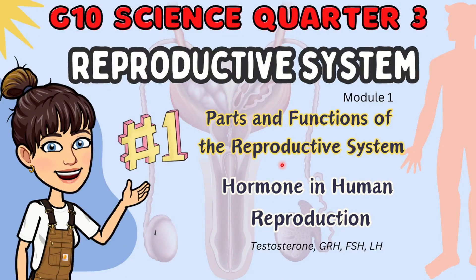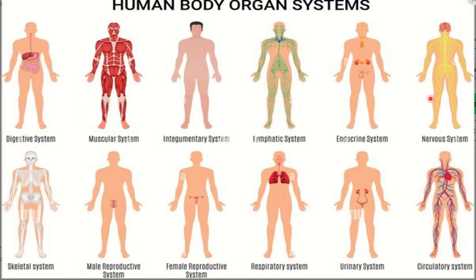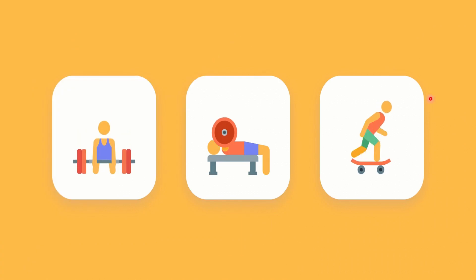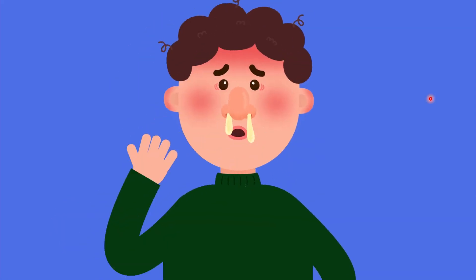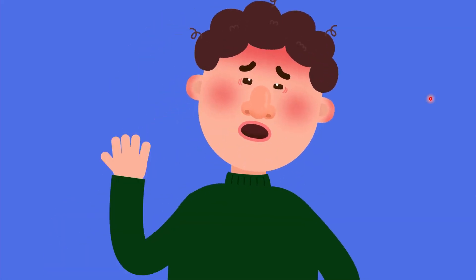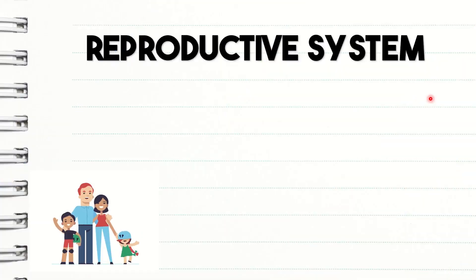Before we proceed, let's have first a very short recall. Remember class, our body is composed of millions of cells. Cells make up tissues. Tissues make up organs. And organs make up organ systems. We have a total of 12 organ systems in our body. They coordinate with one another in order to perform their functions very well. And if any part of these organ systems malfunctions, the body will become unbalanced. Now, let us define what the reproductive system is.